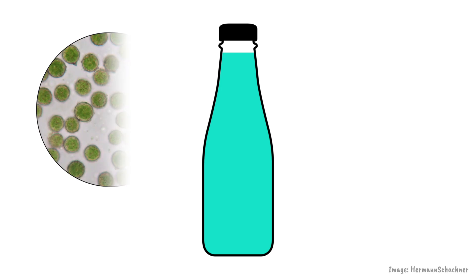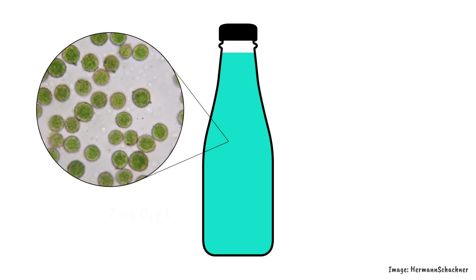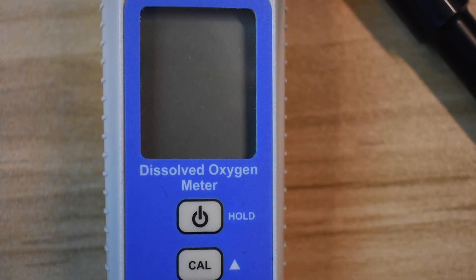Picture a sealed 1 litre sample of water with lots of photosynthesising phytoplankton. At the beginning, there is already oxygen dissolved in the water. We can measure it using a dissolved oxygen meter.